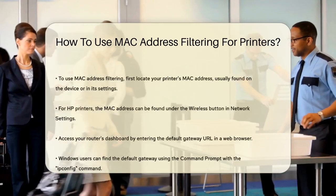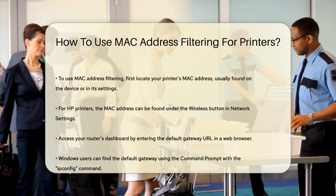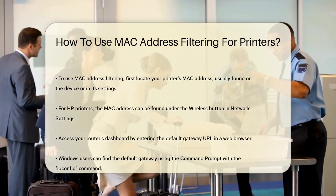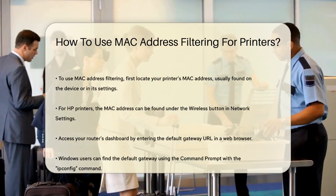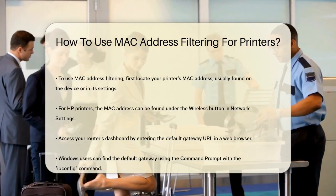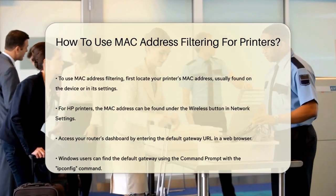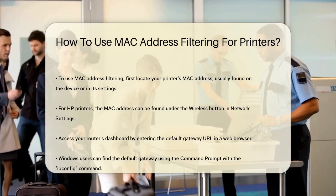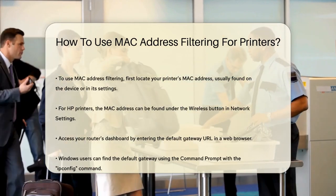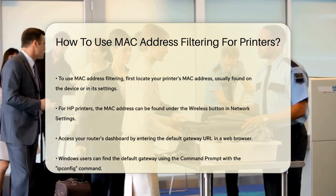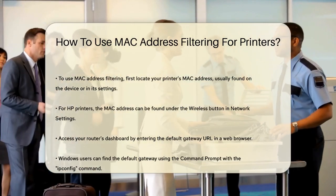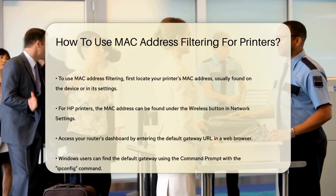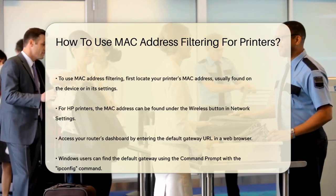To add your printer's MAC address, you need to follow a few steps. First, find the MAC address of your printer. This is usually printed on the back or bottom of the device, or you can find it in the printer's settings menu. For example, on an HP printer, you might navigate to the wireless button and then to the network settings to find the MAC address.